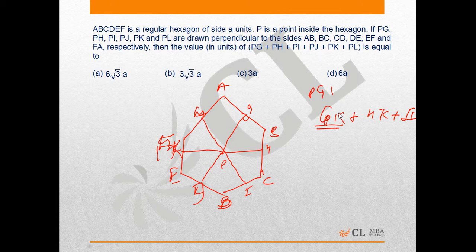GJ will definitely be greater than a and less than 2a, and same would be the case for HK and IL,